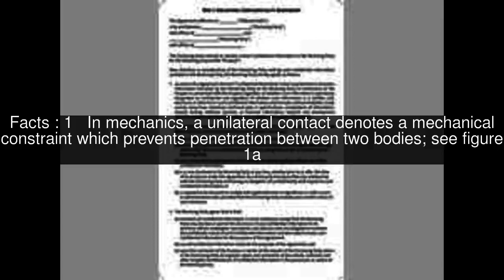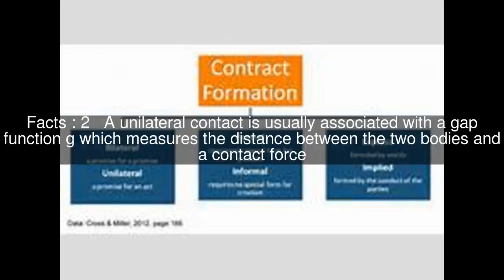In mechanics, a unilateral contact denotes a mechanical constraint which prevents penetration between two bodies, see figure 1a. A unilateral contact is usually associated with a gap function g, which measures the distance between the two bodies, and a contact force.